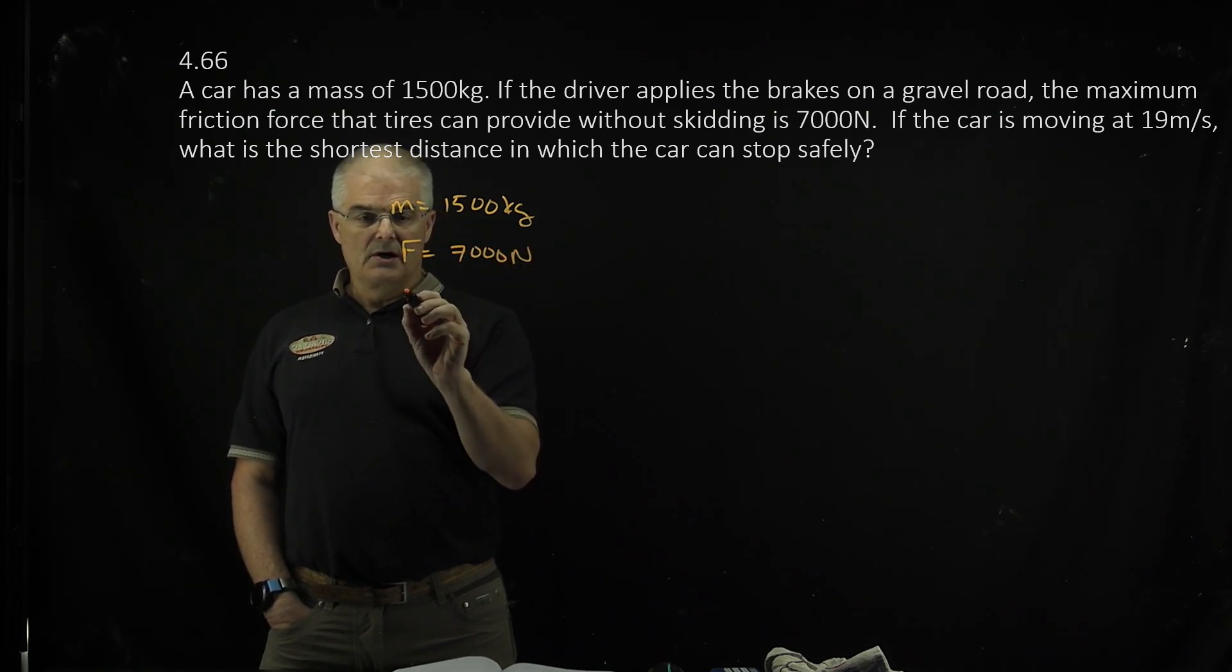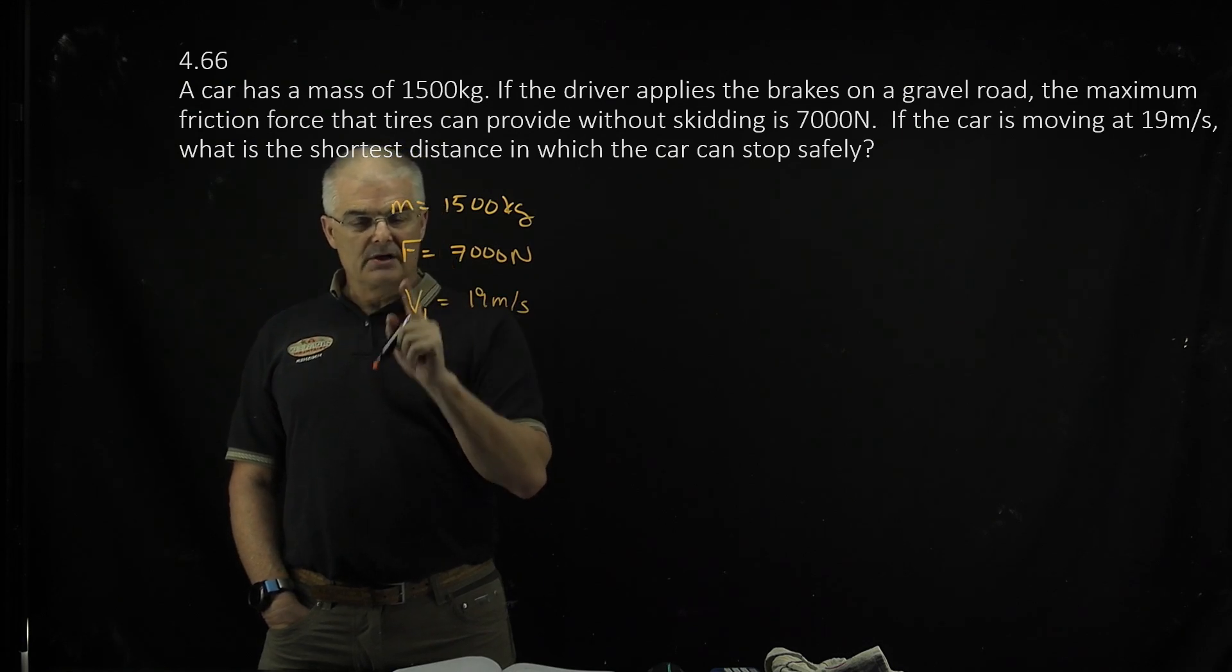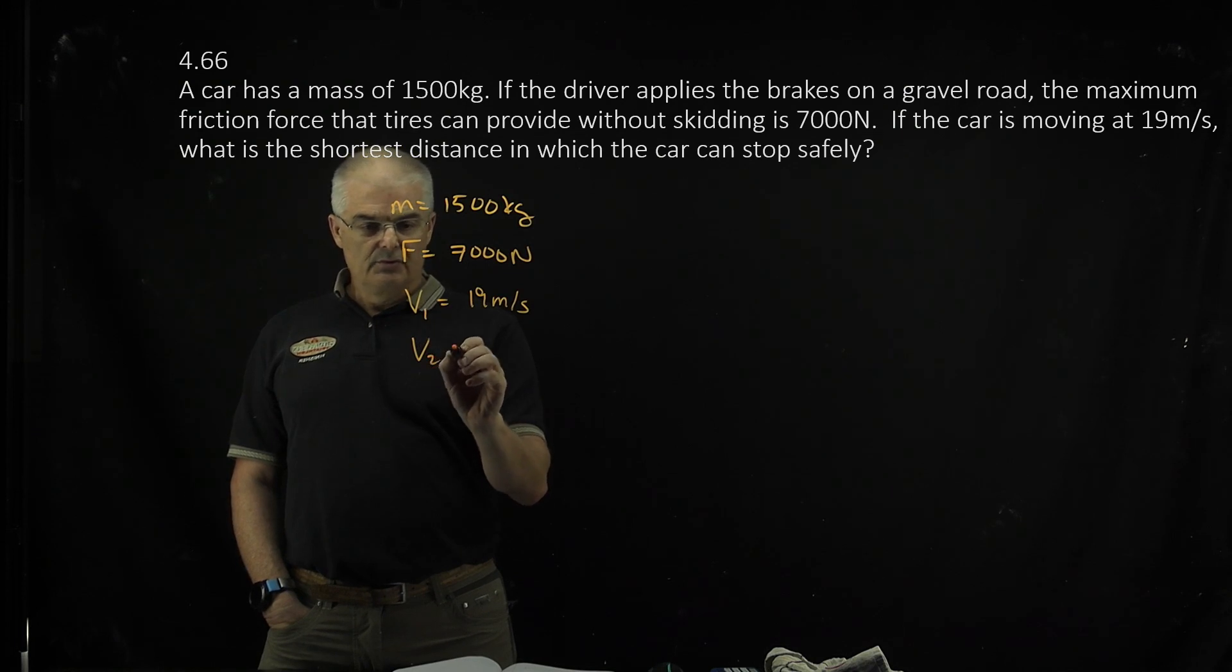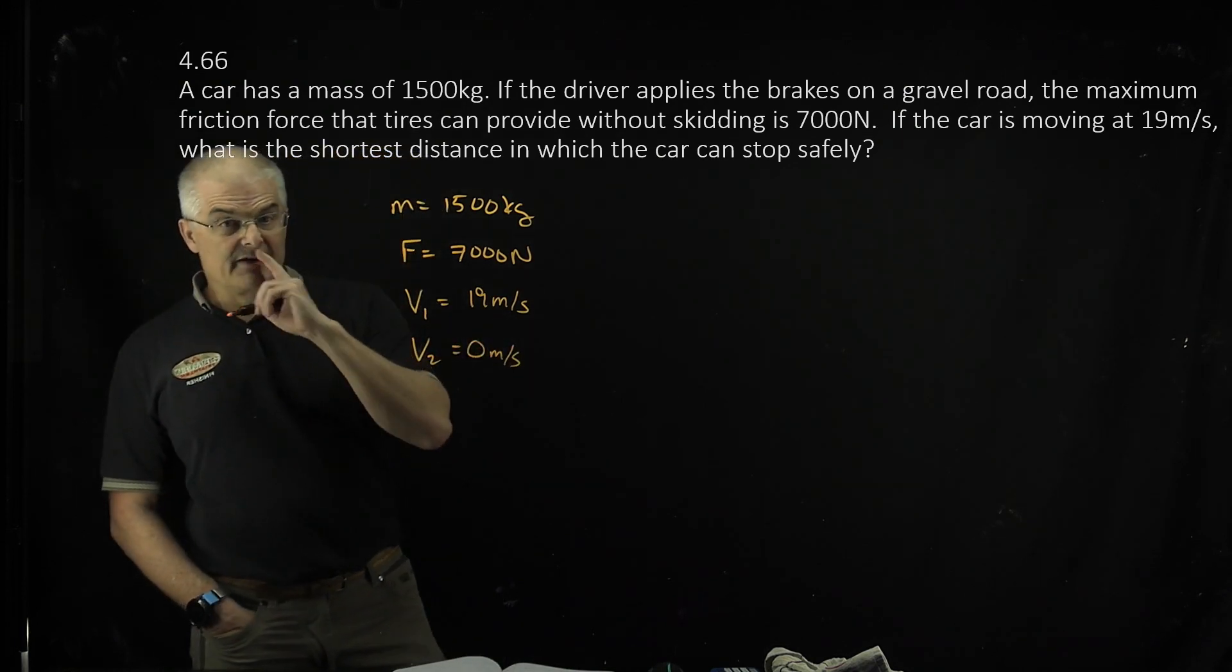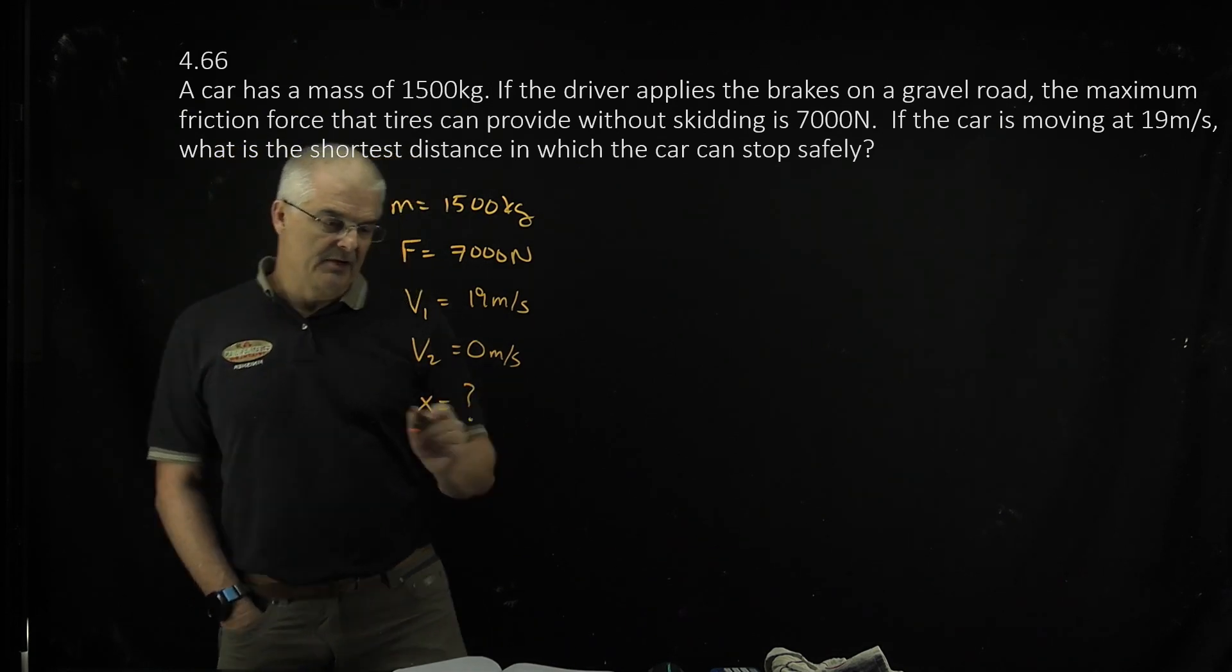The car, V1, is moving at 19 meters per second. And it's talking about when the car can stop safely, so V2 will be 0 meters per second. It says find the shortest distance, or distance, I'm going to call that X. We're trying to solve that problem.